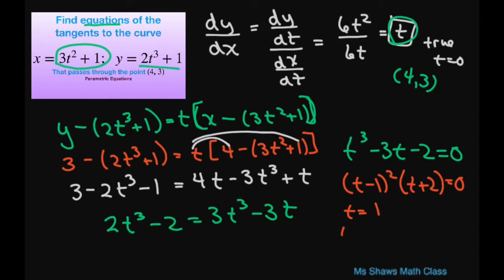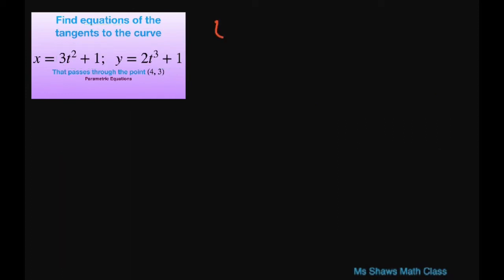For t equals 1 we're going to have... Remember our point is 4 comma 3. So at t equals 1 you're going to get y minus 3 equals 1 times x minus 4. This is going to be y minus 3 equals x minus 4. Simplifying that gives you y equals x minus 1. So that's your first tangent.